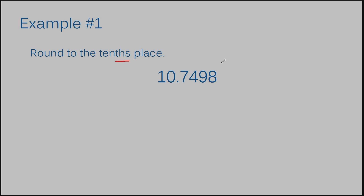Any place value that ends with -THS at the end, you're going to be talking about the numbers that are to the right of the decimal. When you don't have that -THS, you're talking about numbers that are to the left of the decimal. So we're dealing with the tenths place. The tenths place starts here — the very first number on the right of the decimal. So we're rounding to this position.